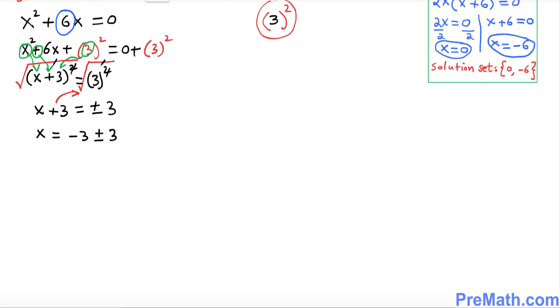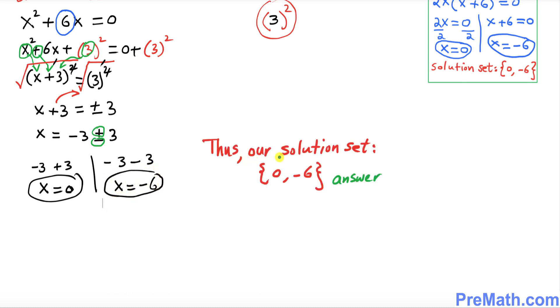So the next step, what we're going to do is I want you to split these positive and negative signs up. We're going to have negative 3 plus 3, and the other side is negative 3 minus 3. So negative 3 and positive 3 become x equal to 0 on this side, and over here x equal to negative 6. Our solution set turns out to be 0 comma negative 6, and that is our answer.